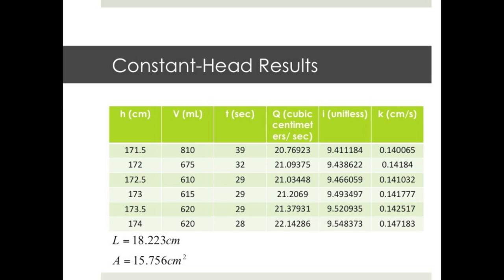Here is our constant head worksheet. The recorded laboratory data is in the first three columns: hydraulic head H in centimeters, volume V in milliliters, and time T in seconds. Hydraulic head is the length measurement from the top of the funnel to the bottom outlet on the permeameter. The volume is the measure of water that flows into the pan in a time increment T. Flow rate Q can be directly calculated from the raw data — one milliliter equals one cubic centimeter, so flow rate is calculated by dividing volume V by time increment T. Assuming the dimensions of the sample do not change, K can be calculated using Darcy's law as K equals Q over IA, where I changes with each trial because hydraulic head changes. K is a parameter unique to the soil, not hydraulic head or gradient, so K should look somewhat constant throughout trials.